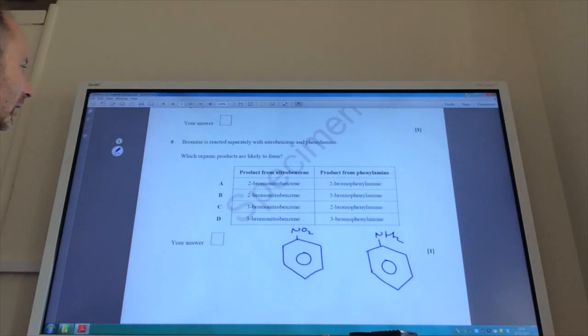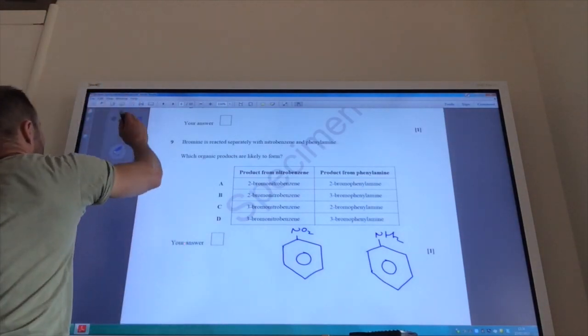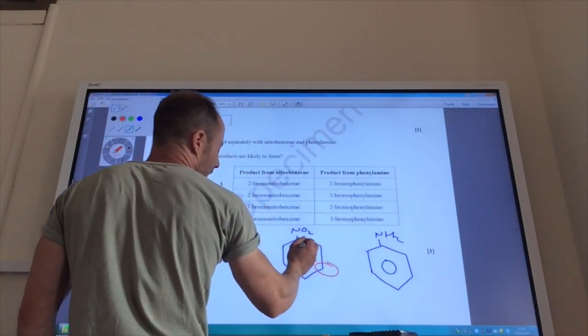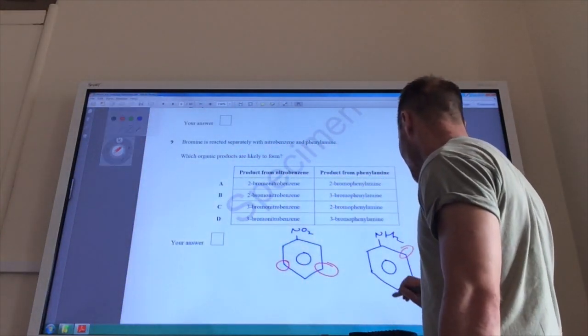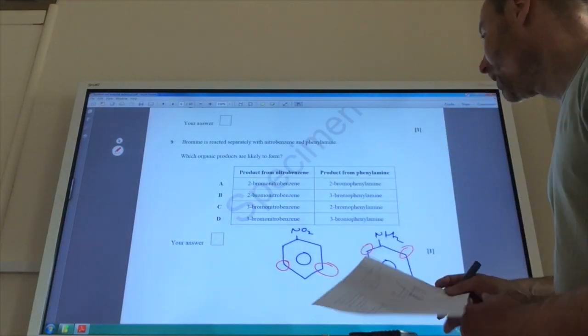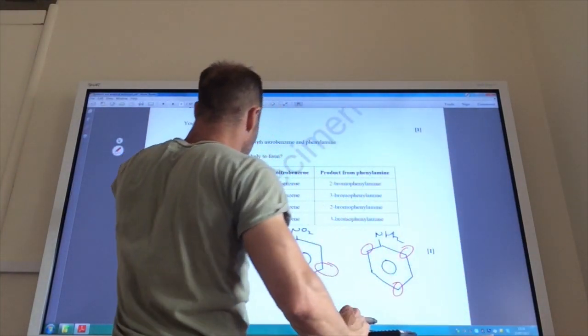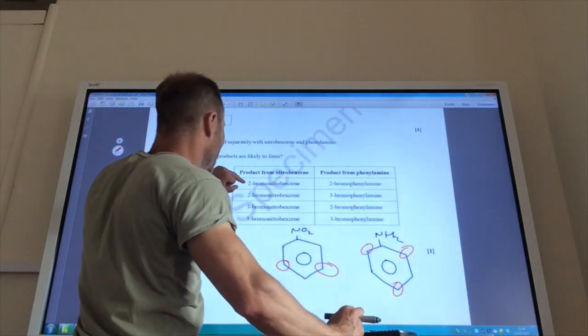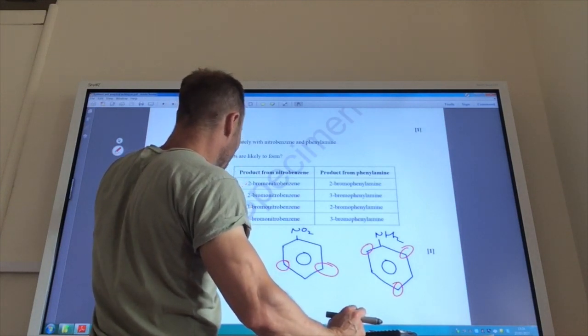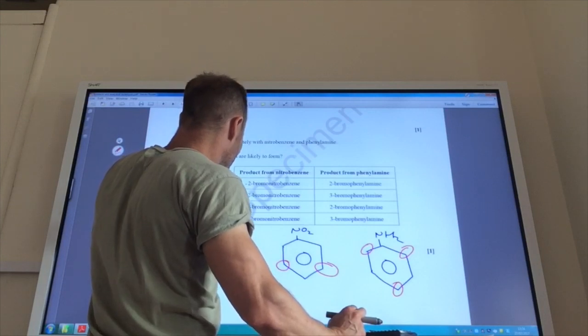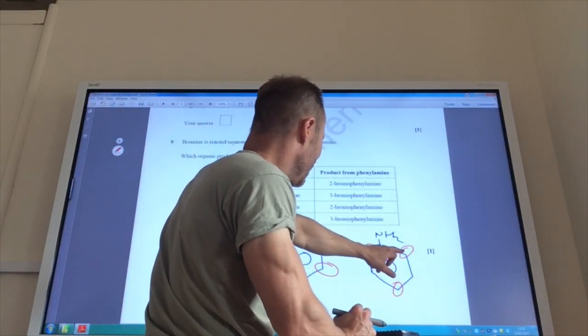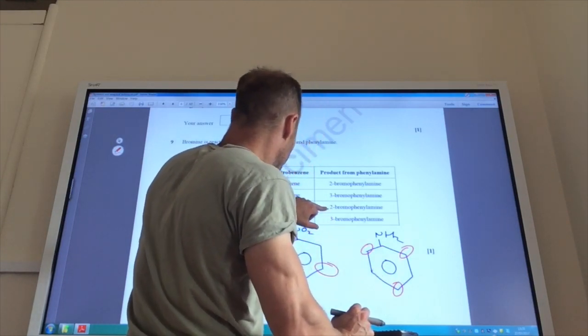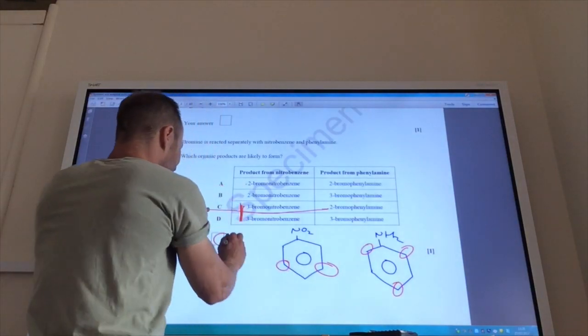Okay, so for this one it helps probably to draw out nitrobenzene and phenylamine. Nitrobenzene is electron withdrawing from the benzene ring. So that will direct groups to the 3, 5 position. Phenylamine, the amino group, is electron donating, so it directs groups to the 2, 4, 6 position. So, what is the product from nitrobenzene when reacted with bromine? It's not going to be 2-bromonitrobenzene, is it? It's going to be 3. So, it's either that one or that one. Okay. But when I look at this one, it's going to either be 2, 4, 6. So, it's going to be that one. So, the answer is C for 9.